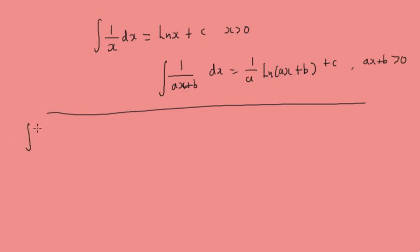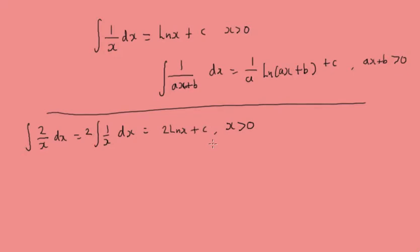Let's use this to do a few examples. First, we're going to integrate 2 over x dx. That's the same as taking the 2 out and then integrating 1 over x dx, which gives us 2 log x plus c. Always stipulate the x greater than 0 condition when answering these.